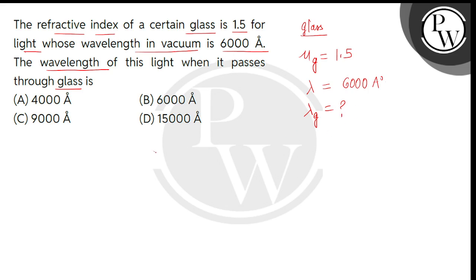So bachyo, for this we'll take the expression: A mu G, that is the absolute refractive index of glass, is equal to the wavelength in air to the wavelength in glass. So wavelength in glass will be wavelength in air divided by A mu G.